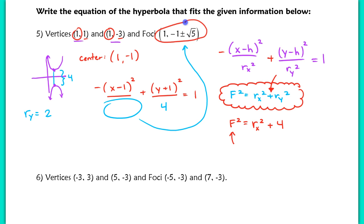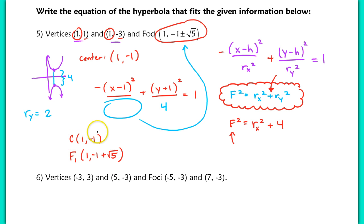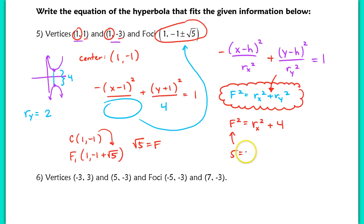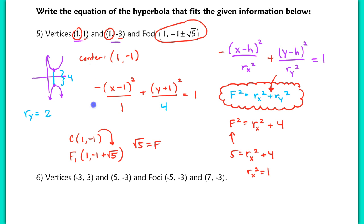The focal radius f is the distance between the center at (1, -1) and one of the foci at (1, -1 + √5). The center is just translated up √5 units, so f equals √5. Squaring f gives 5, so 5 equals r sub x squared plus 4. Solving gives r sub x squared equals 1. Plugging back in, we have the complete equation of the hyperbola that matches the given information.